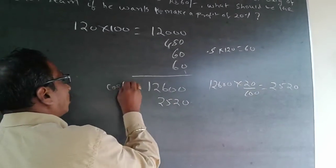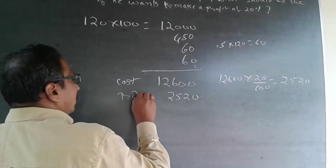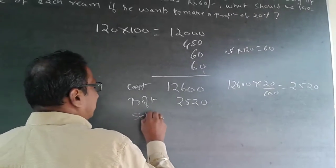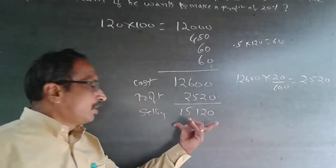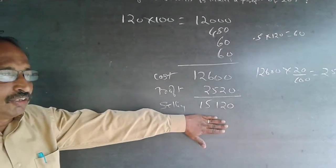This is cost price, total cost price. This is the profit. And this will be the selling price. The selling price will be 15,120. But don't give the answer as 15,120.